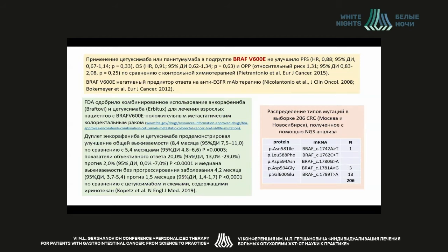For somatic mutations of gene BRAF, there is evidence that the V600E mutation deteriorates prognosis. It's associated with MSI and right-side localization. A meta-analysis showed that patients with BRAF V600E won't benefit from cetuximab added to classic chemotherapy regimens. Therapeutic regimens including doublets and vemurafenib demonstrated a statistically significant two-fold improvement in overall survival for metastatic colorectal cancer patients, reflected in FDA approval. BRAF V600E detection is a very important predictive value.